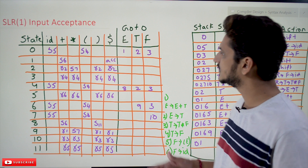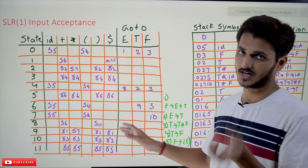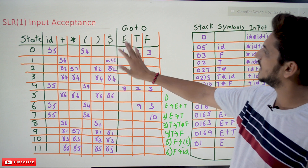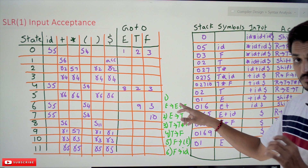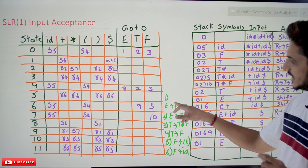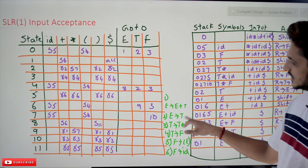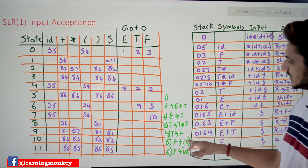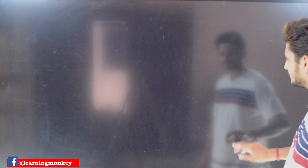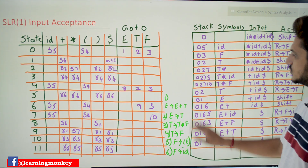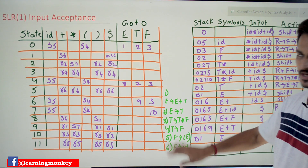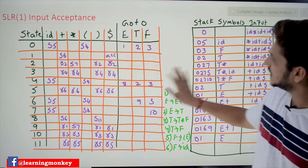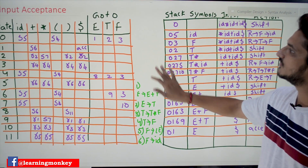We will check the acceptance of that input string using the parsing table which we already generated in our last class. This is the SLR(1) table we constructed for our grammar. The numbering for each production is: 1) E → E + T, 2) E → T, 3) T → T★F, 4) T → F, 5) F → (E), 6) F → id. Using this parsing table we can check for acceptance of the given input string.